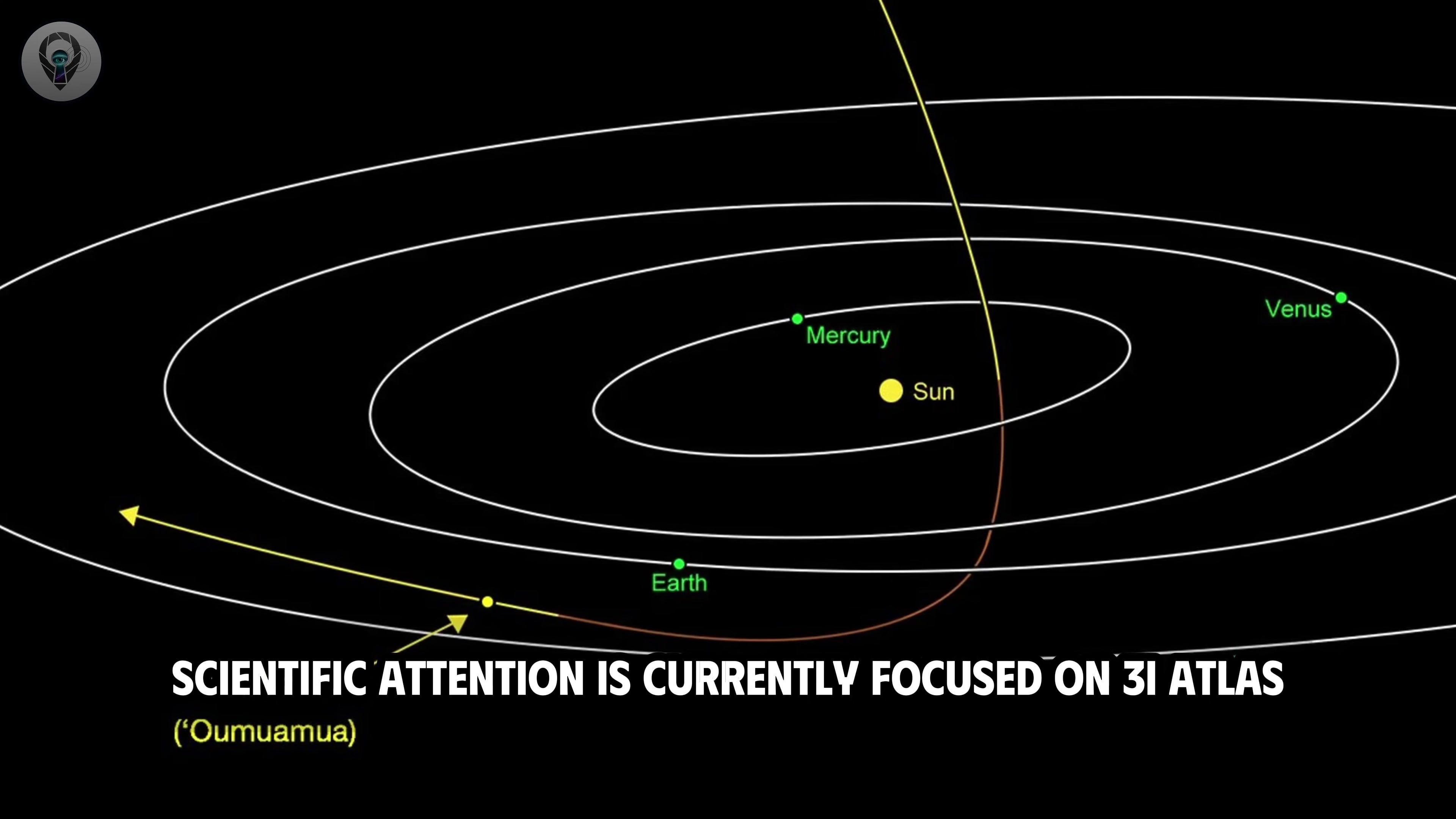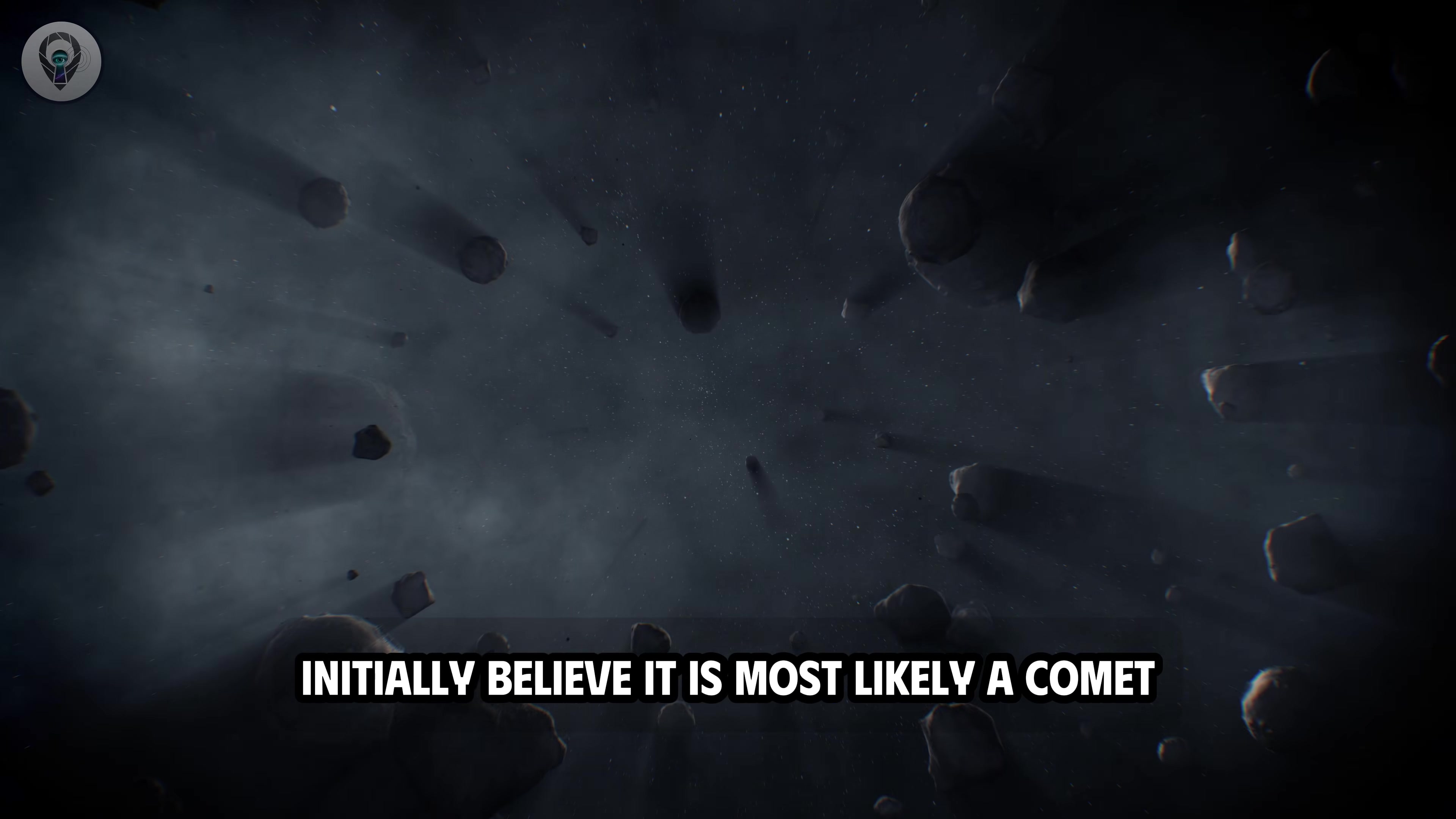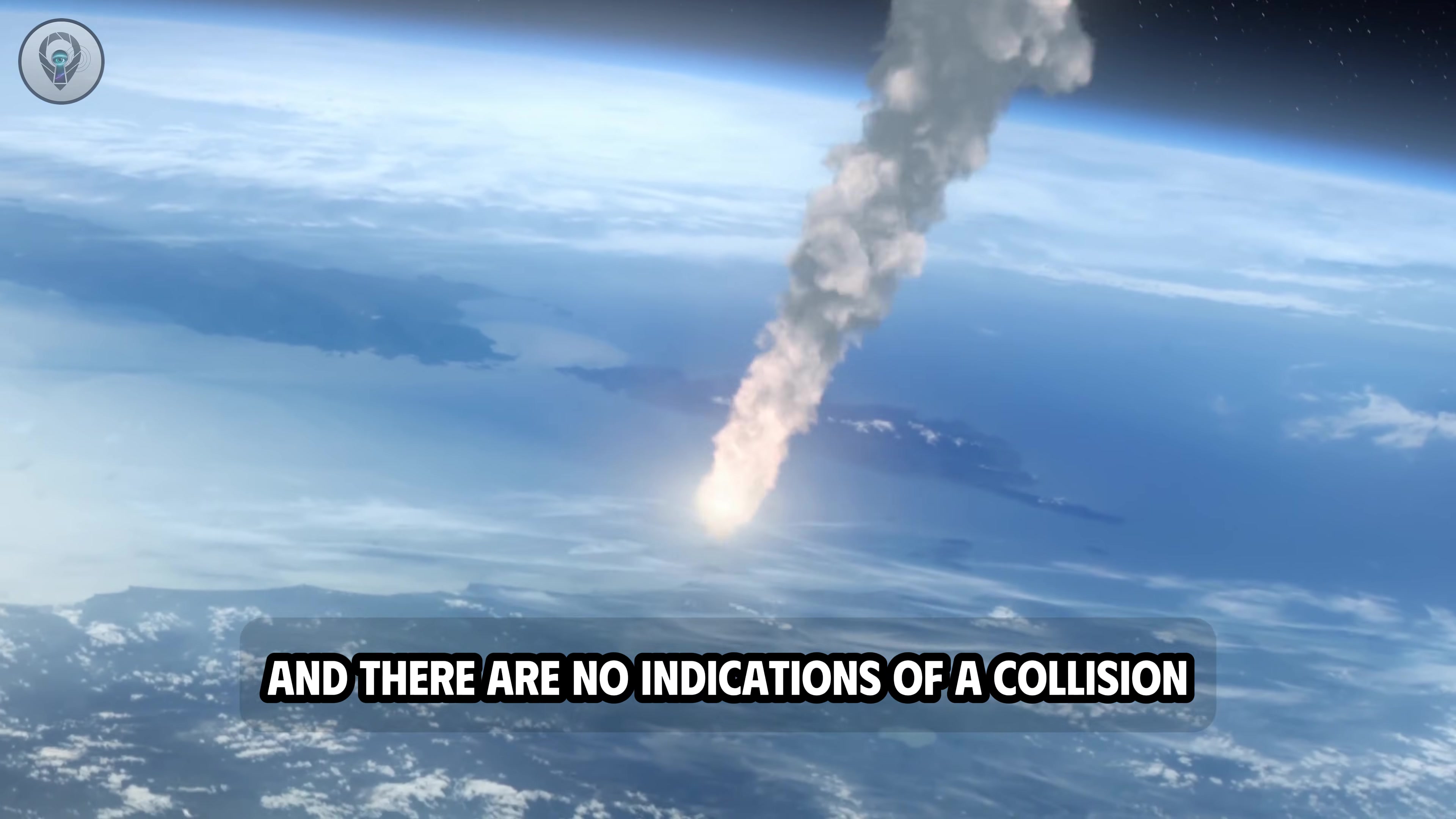Scientific attention is currently focused on 3i Atlas, the third interstellar object ever discovered to enter the vicinity of our solar system. This object is predicted to reach its closest approach to Earth on December 19th, at approximately 170 million miles. Space agencies, including NASA, initially believe it is most likely a comet. However, several observed features make this hypothesis unconvincing, sparking other speculations, including the possibility that it is not simply a natural object. According to current assessments, 3i Atlas poses no threat to Earth. Its approach distance is considered safe, and there are no indications of a collision or physical impact.